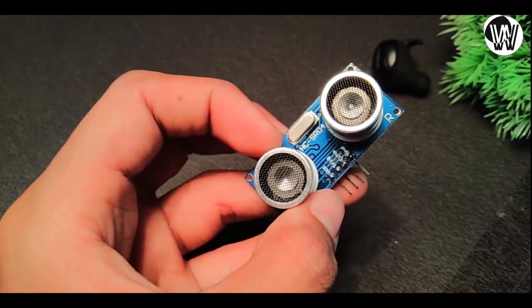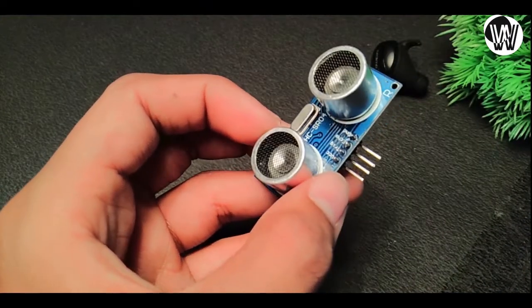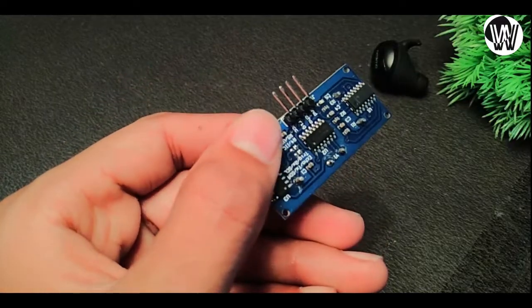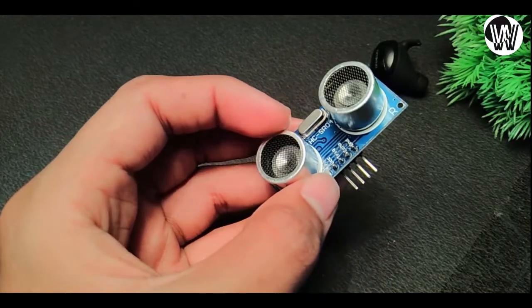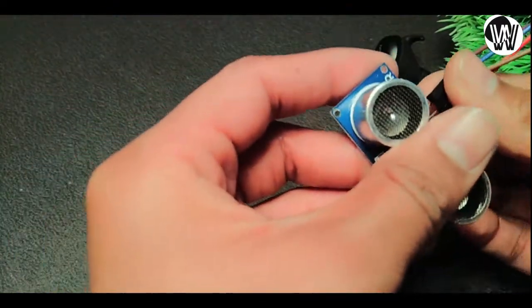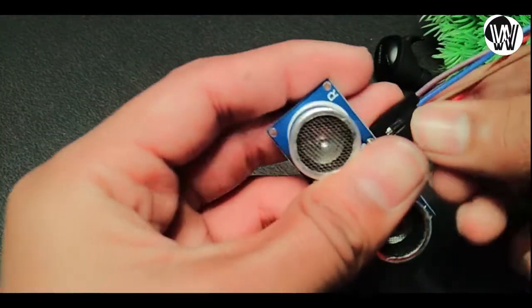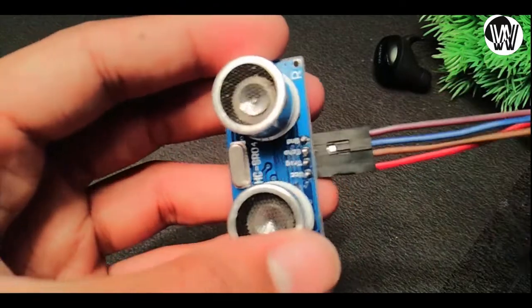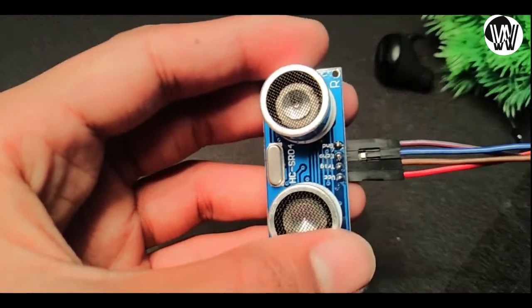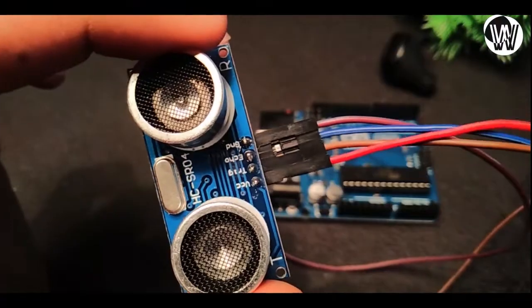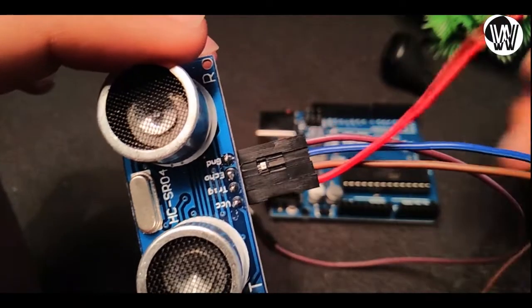First take the ultrasonic sensor and connect four jumper wires to the four pins of the ultrasonic sensor. We have connected these jumper wires to the ultrasonic sensor.